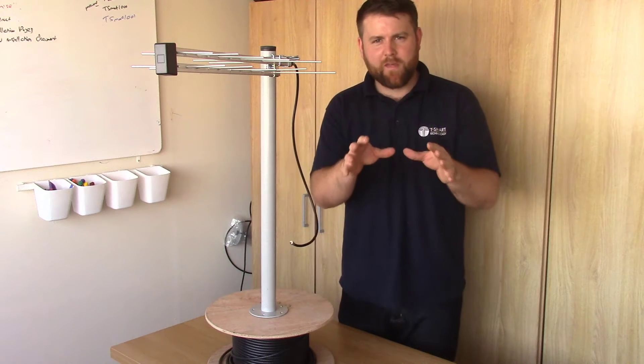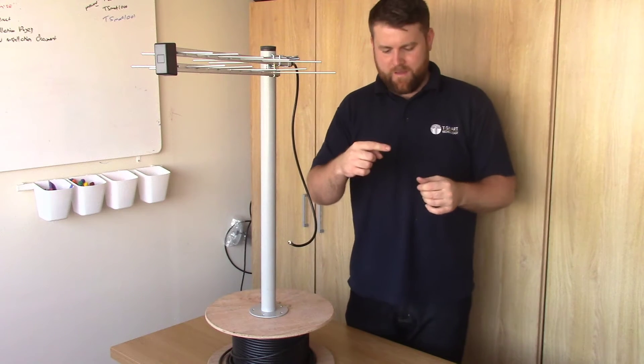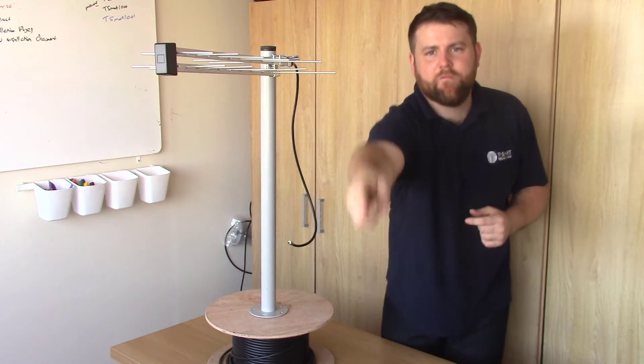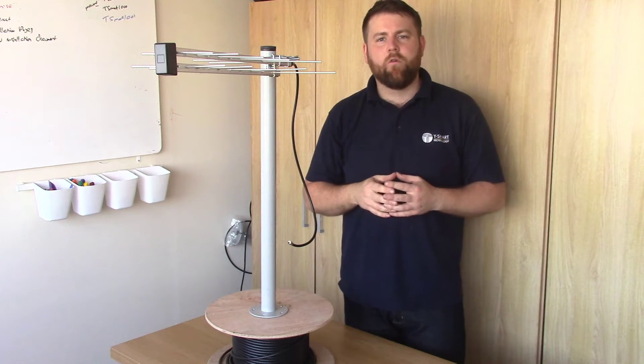Not everyone knows that different transmitters use different polarisations. Some transmitters will send their signal vertically polarised. In the UK, so it looks like that through the air, that will be mainly the relay transmitters, but some main transmitters do that also.